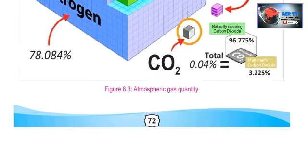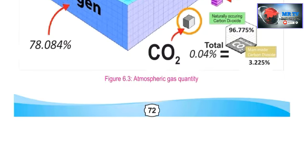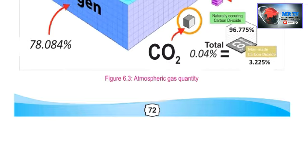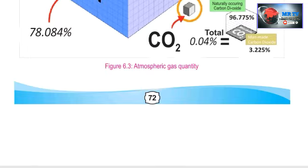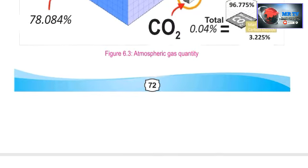Carbon monoxide is 0.002%. Carbon dioxide is 0.04%. On Venus, CO₂ makes up 96.77% of the atmosphere, with 3.22% nitrogen, leaving very little oxygen remaining.